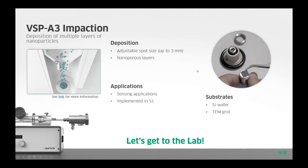The impaction unit has an adjustable spot size of up to three millimeters and is ideal for making nanoporous layers. Substrates are typically 2D, such as silicon wafers or TEM grids. Applications are mostly sensing — either gas sensing or optical applications. It is also implemented in our follow-up module, the S1 size selector, which we'll talk about in one of our next webinars.